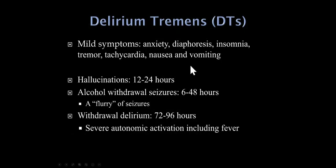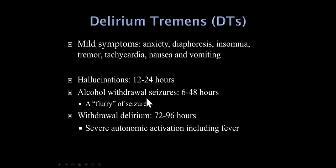Delirium tremens: mild alcohol withdrawal leads to anxiety, sweating, insomnia, tremor, tachycardia, nausea, and vomiting. We use the term delirium tremens when the patient has more dramatic autonomic activation. The three classic features are: hallucinations within the first 12 to 24 hours — often scary, like spiders on the wall; seizures beginning within 6 to 48 hours from the last drink, classically a flurry of seizures one right after another; and then later, withdrawal delirium with confusion and significant autonomic activation, usually including fever.